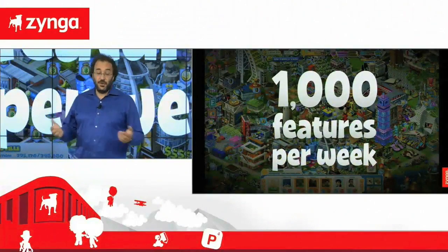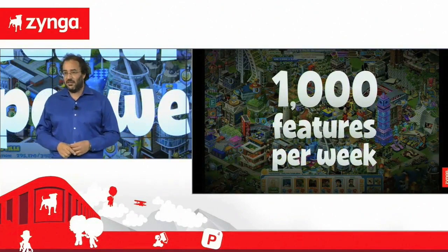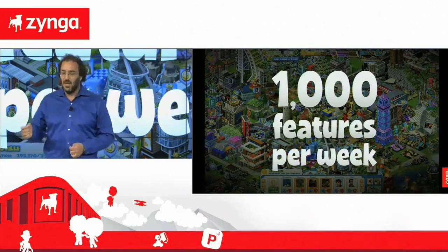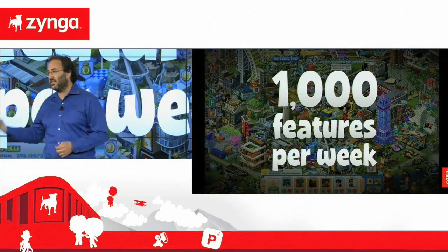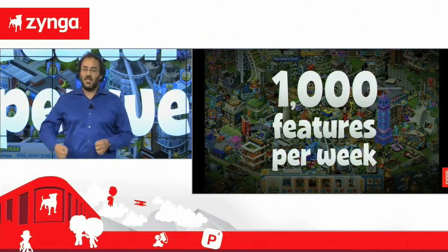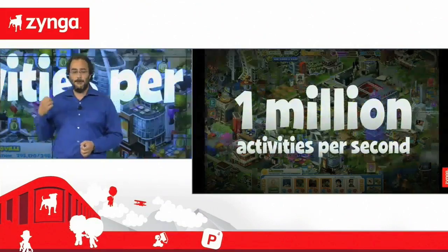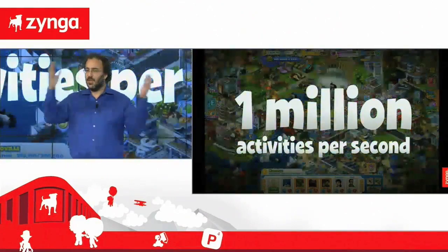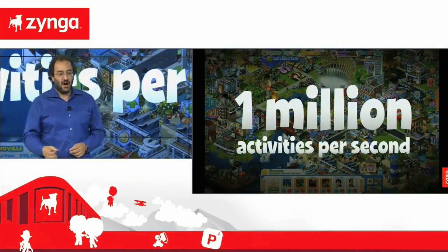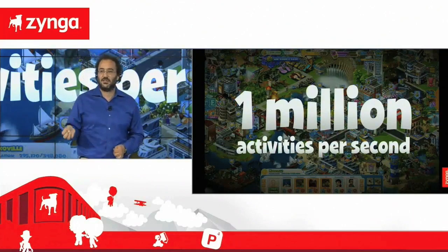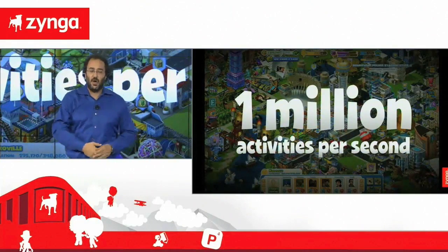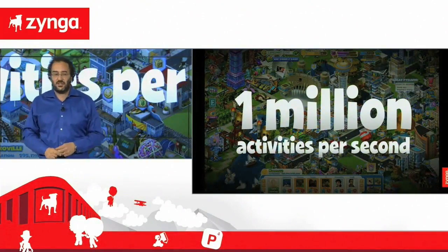Now, if you think we create a lot of content — and we do create a lot of content very quickly — it's absolutely dwarfed by the amount of content our players create. Every single action our players take: the rent my cousins collect in Cityville, the words they play in Words with Friends, the pictures they draw in Draw Something — it all adds up to about 1 million activities per second. Our ability to deliver content quickly to our players, and the rate at which they consume and create content of their own, in its totality, is something that the internet has never seen before.